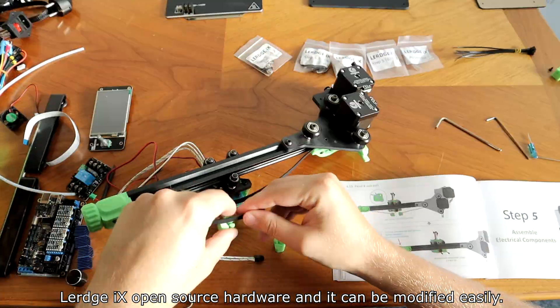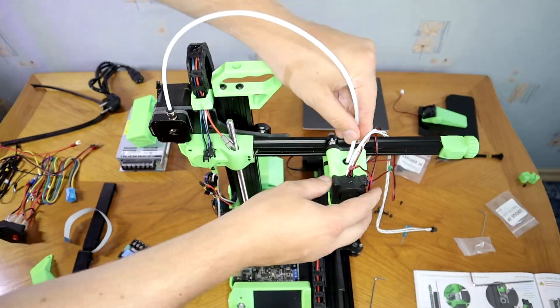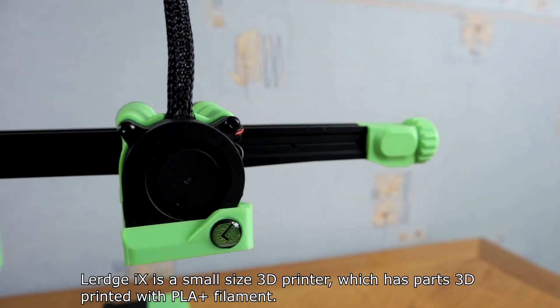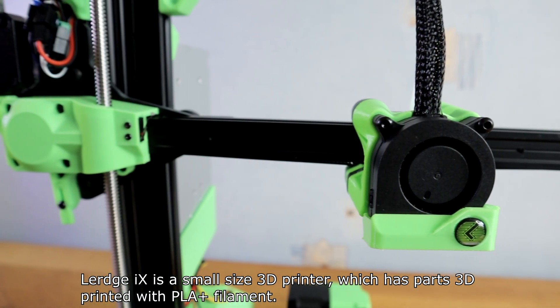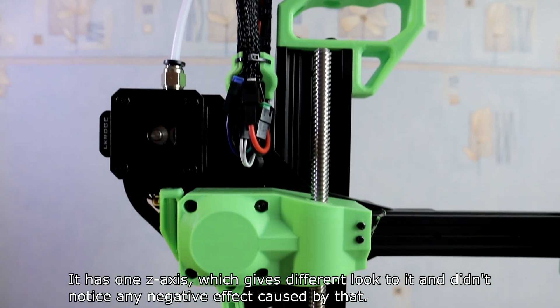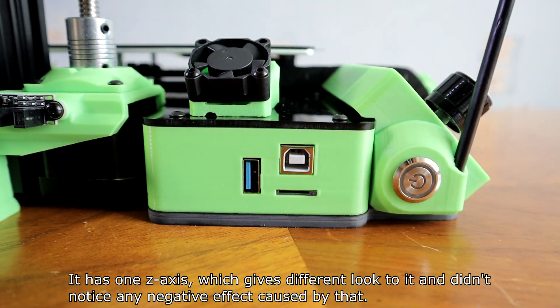Lurch iX has open source hardware and it can be modified easily. Lurch iX is a small size 3D printer which has parts 3D printed with PLA plus filament. It has a 1C-axis, which gives a different look to it and I didn't notice any negative effect caused by that.